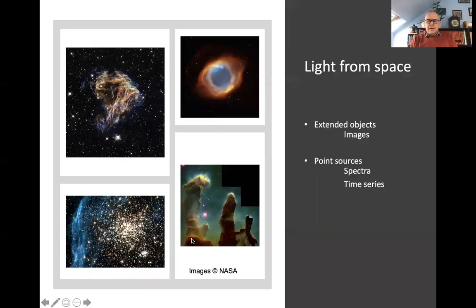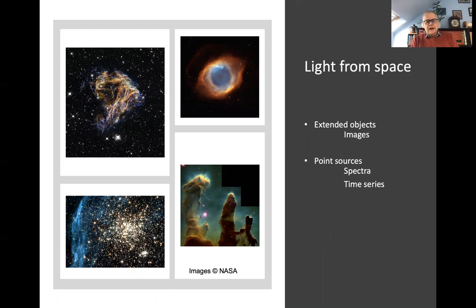Let's think about how we do astronomy. When we're trying to study objects out there in space, all we have to go on is the light that they emit and that we detect here on Earth. When I say light I might mean any part of the electromagnetic spectrum. The simplest thing we tend to think of is images — these are all Hubble Space Telescope images showing a supernova remnant, a planetary nebula, a star cluster, and a star-forming region. By examining the structure we can understand a great deal about what's going on — the distribution of material, its colours telling us something about temperature or composition.